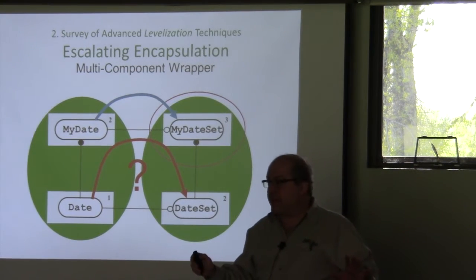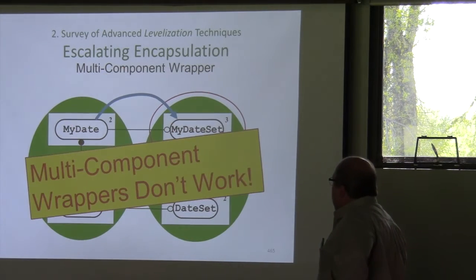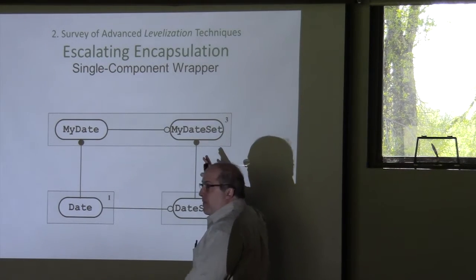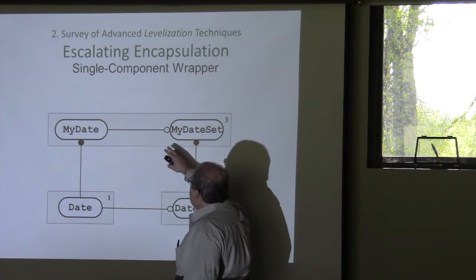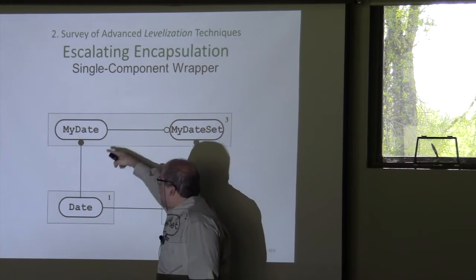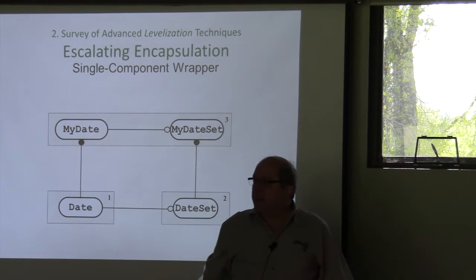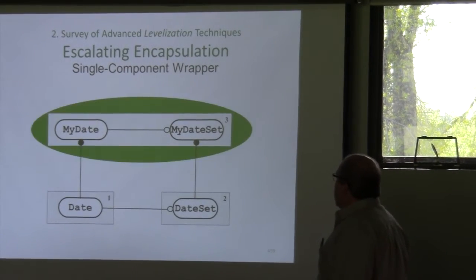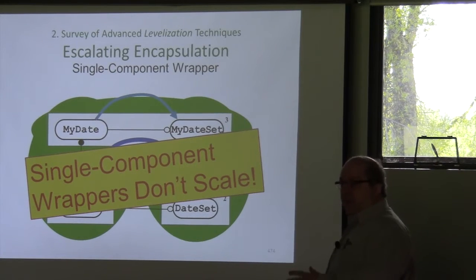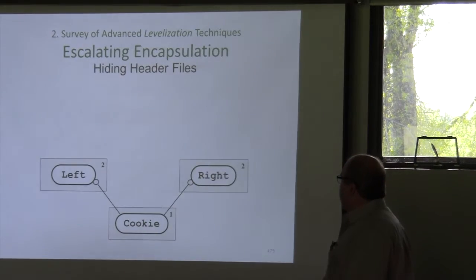We can fix that by making it a single component wrapper. Now we have friendship, and this can make the other a friend. As soon as that happens, it can reach in and grab the date and it all works. The trouble is, single component wrappers don't scale. If you try to make it bigger, it doesn't scale.